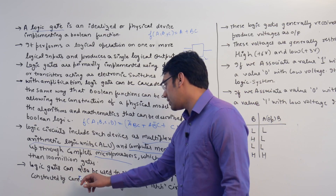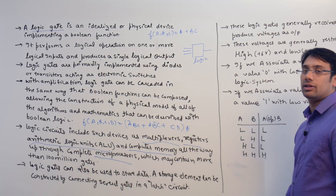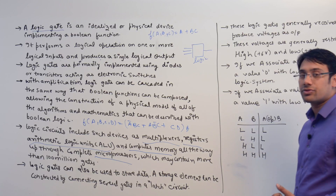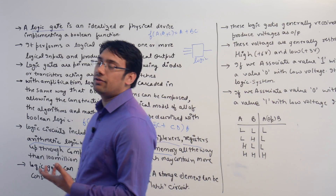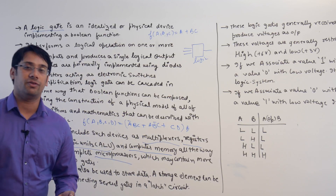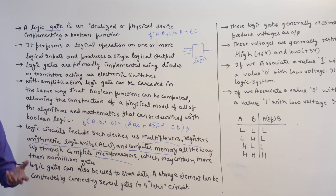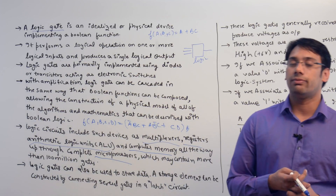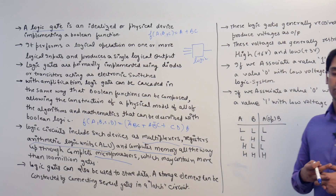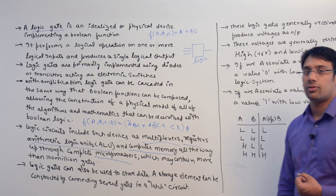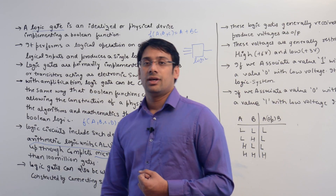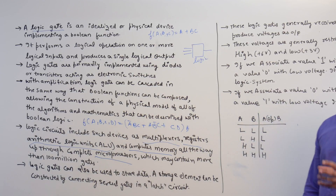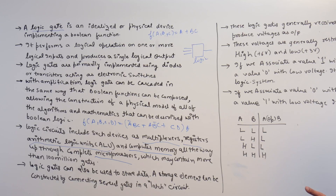A logic gate can also be used to store data in the form of a latch. When we study sequential circuits, we will study latches, SR flip-flops, JK flip-flops, D flip-flops, and other types of flip-flops. The basic unit that remembers one bit of information is called a latch. Logic gates can be used to implement data storage devices like registers, cache memory, and main memory using latches.